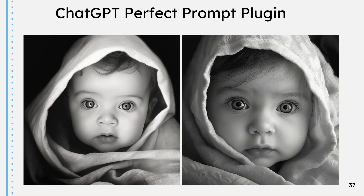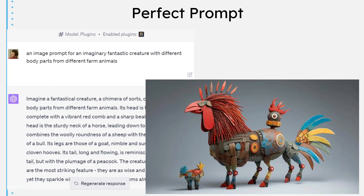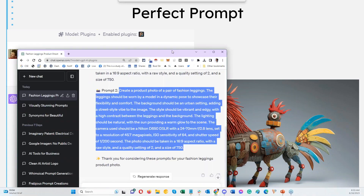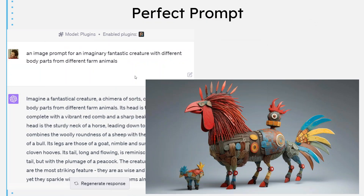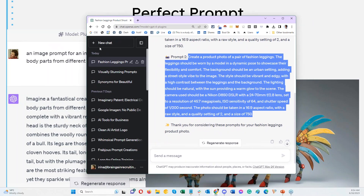Some words are banned — someone said they used 'full frontal' and got banned, but you can appeal and sometimes they'll allow it. Now, Perfect Prompt is a different plugin. Here you can see an image I created when I asked for a creature with different body parts from different farm animals — one of many varieties it created. We're going to GPT-4 and now we want to use Perfect Prompt instead of Photorealistic.